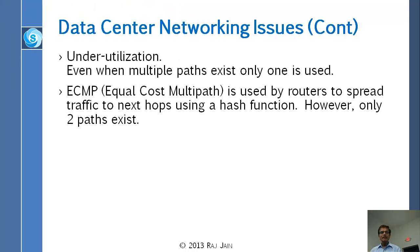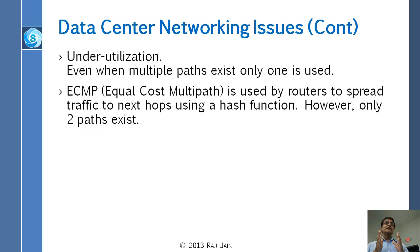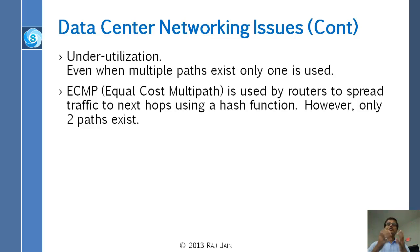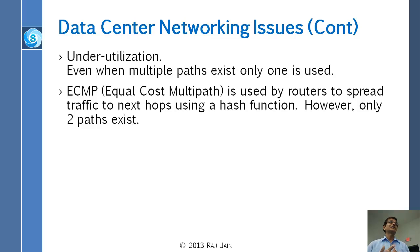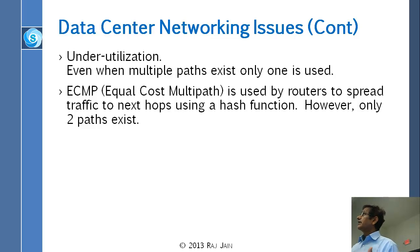Under-utilization is that we are not using all the paths — everybody is taking the shortest path, and that is the problem. You were told in 473 that the shortest path is best, but if everybody takes the shortest path it will be congested while everything else is empty. Multiple paths exist, but only one is used — even if there are multiple shortest paths, we don't use parallel paths.